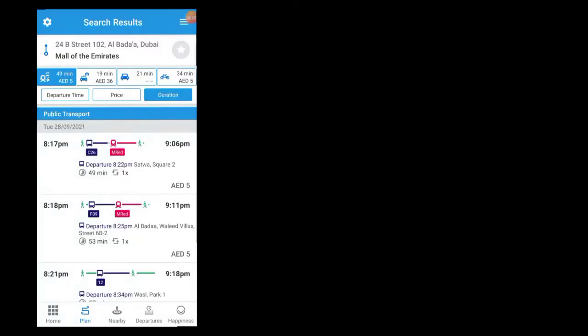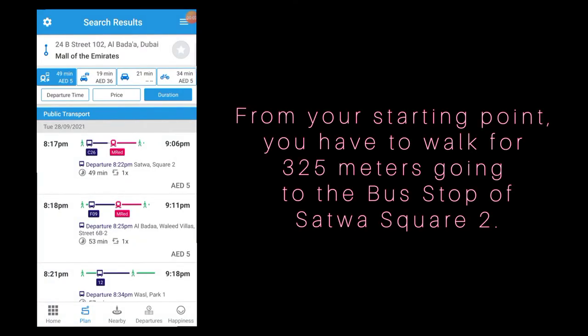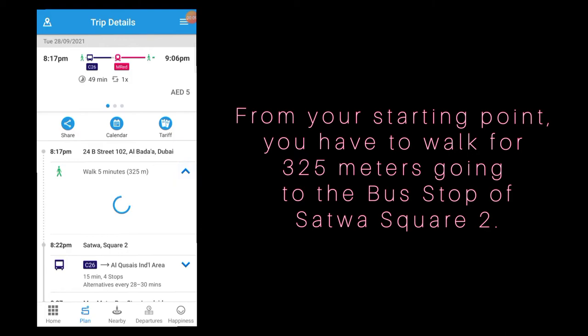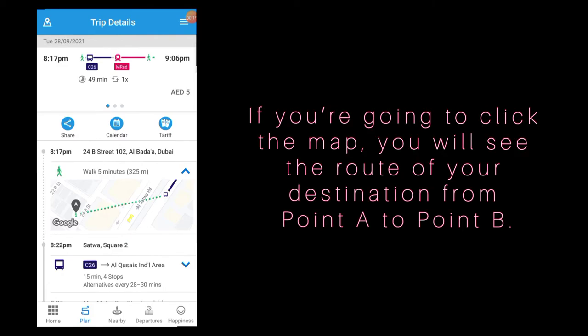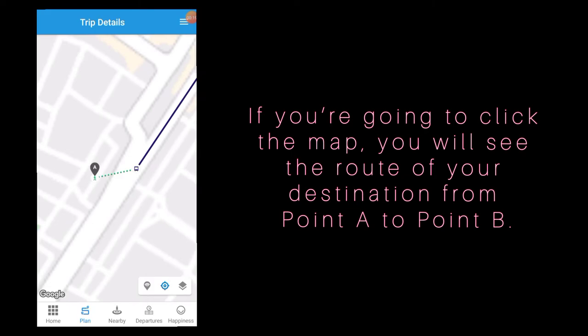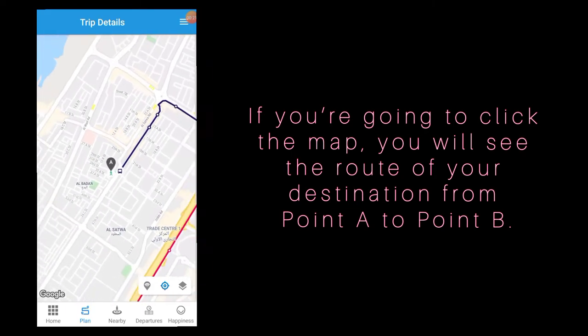Let's take this example. From your starting point, you have to walk 325 meters to the bus stop at Satwa Square 2. If you click the map, you will see the route of your destination from point A to point B.